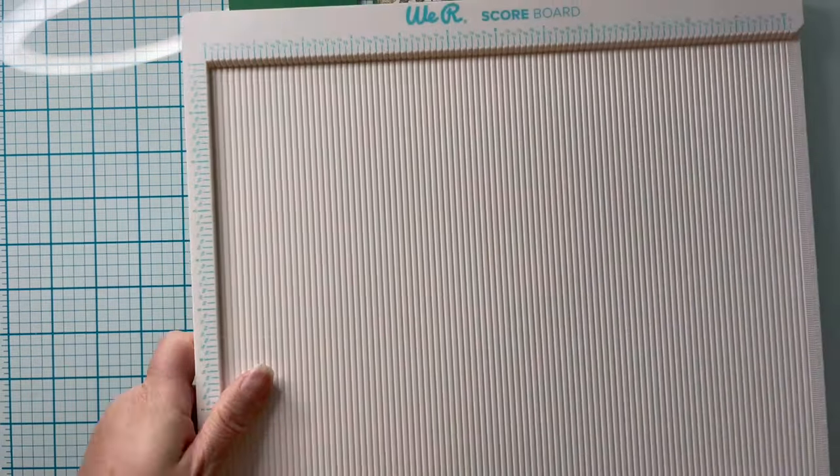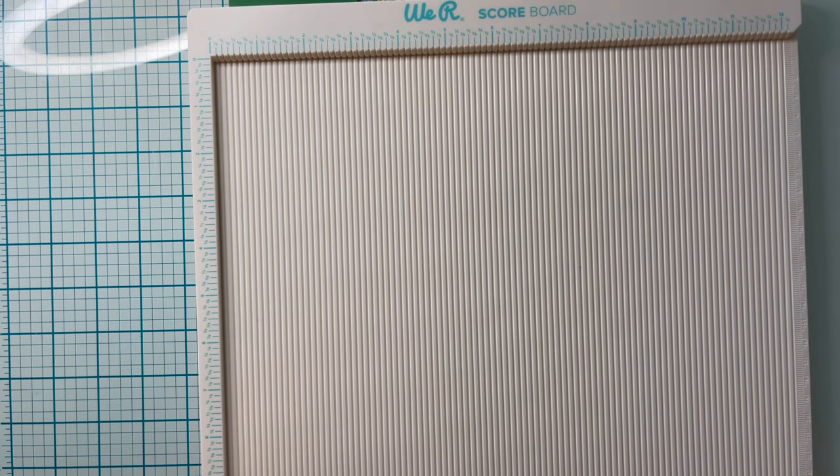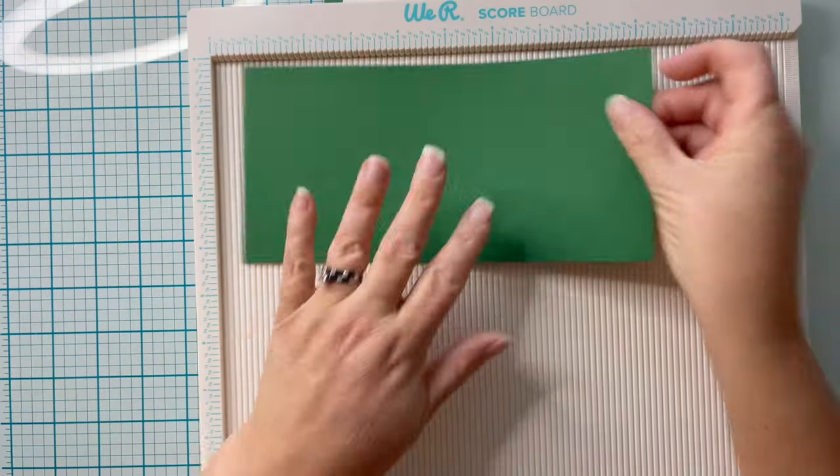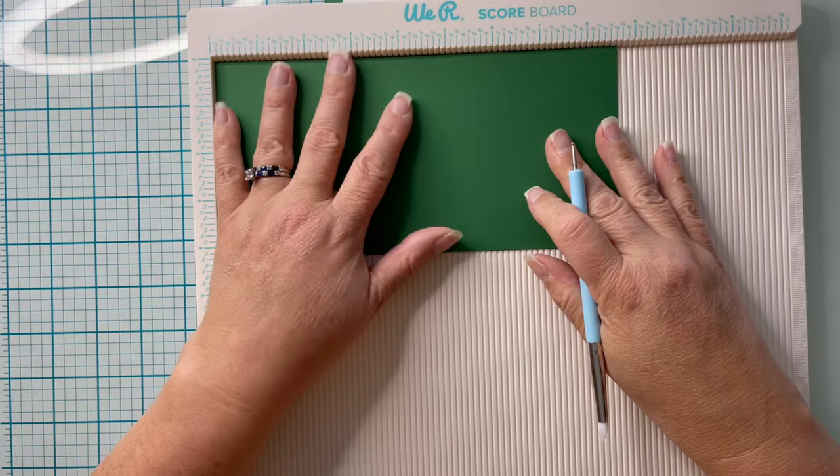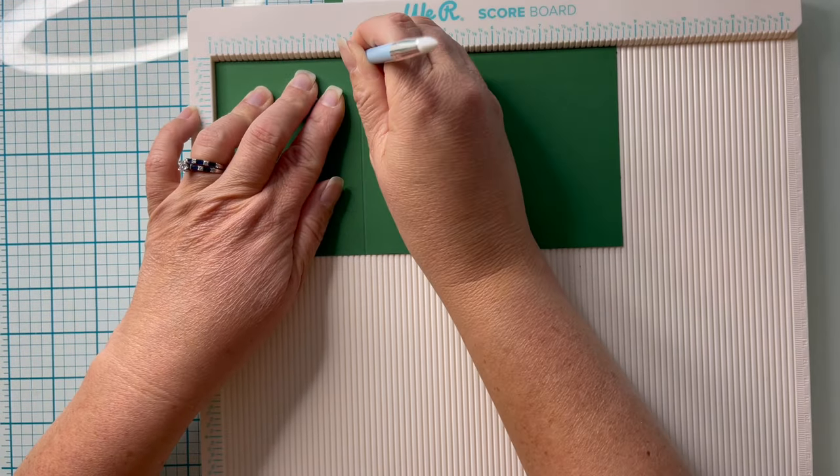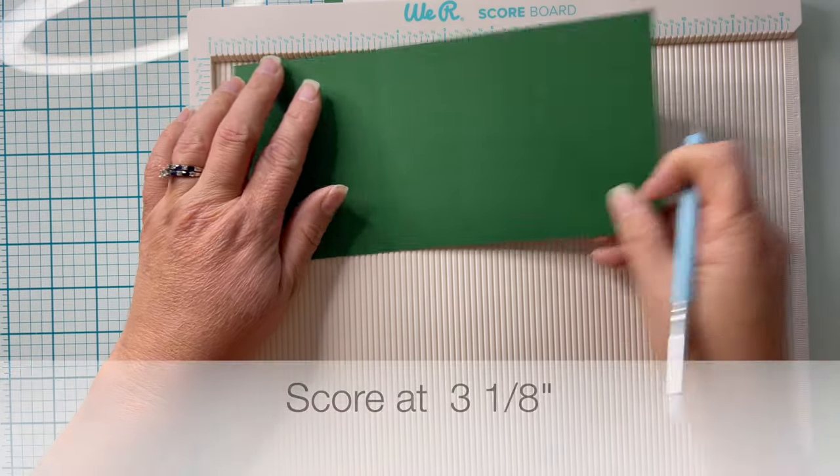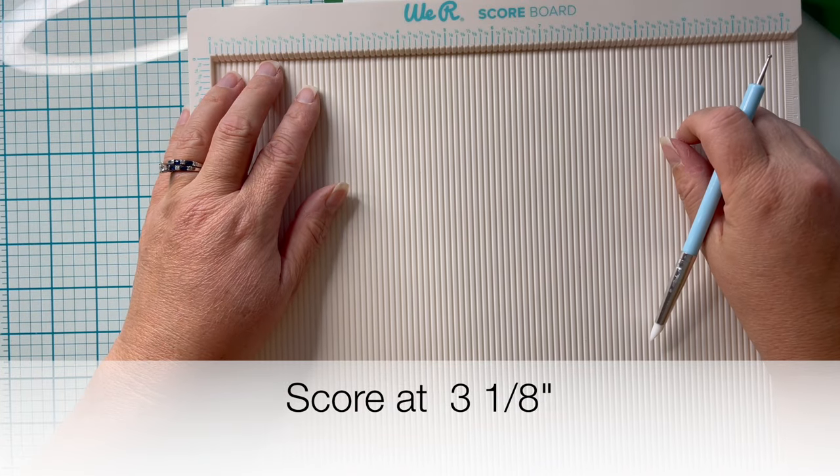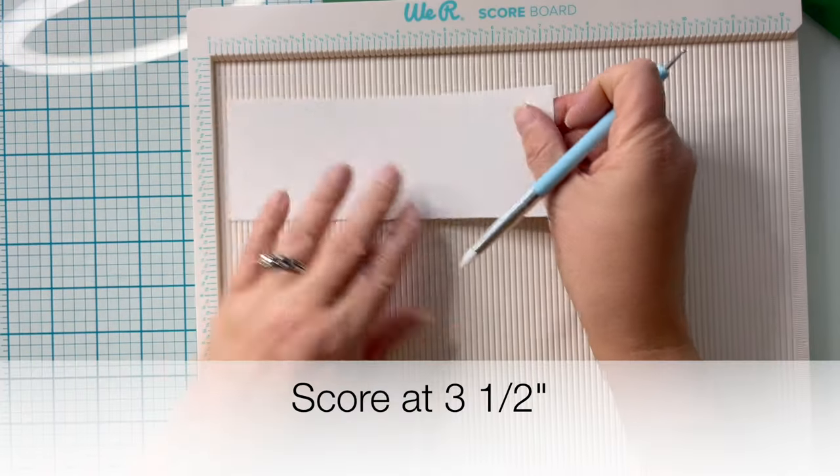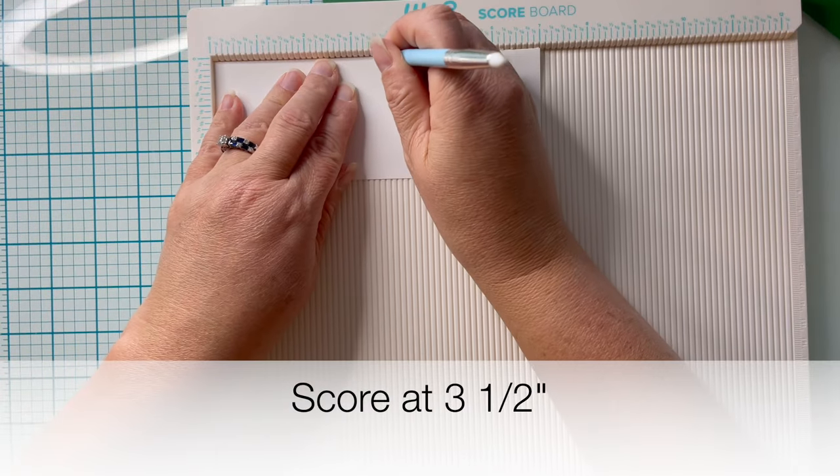With all my cutting done I'm now bringing in my scoreboard. I have two pieces of card that need to be scored. The first one, that green base, I'm going to score at 3 and 1/8 inches. Set that aside and move to our neutral colored layer. That one's going to be scored right in half at 3 and 1/2 inches.